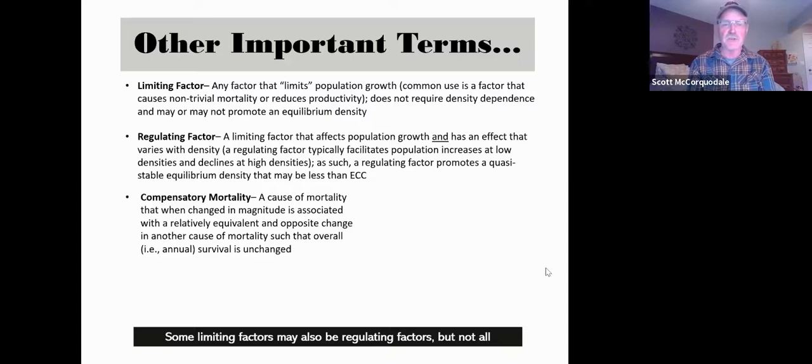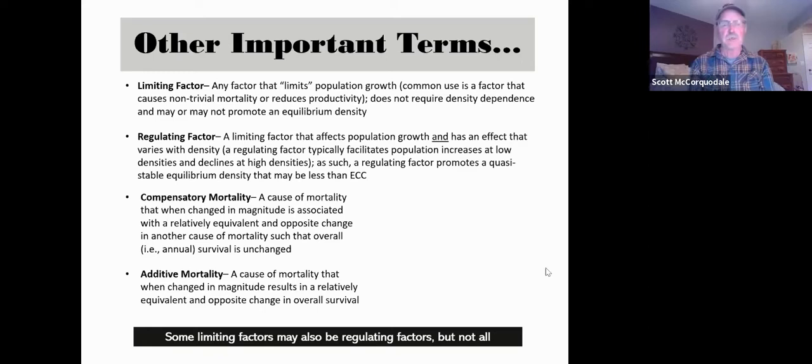Another really important term you will run into all the time in this body of literature is compensatory mortality. Compensatory mortality is a cause of mortality that, when changed in magnitude, is associated with a relatively equivalent and opposite change in another cause of mortality such that the overall annual survival will remain unchanged. That contrasts with what we call additive mortality, which is the cause of mortality that, when changed in magnitude, results in a relatively equivalent and opposite change in the overall survival of animals in the population.